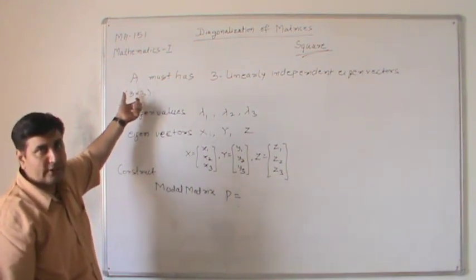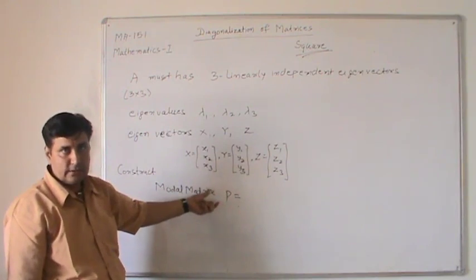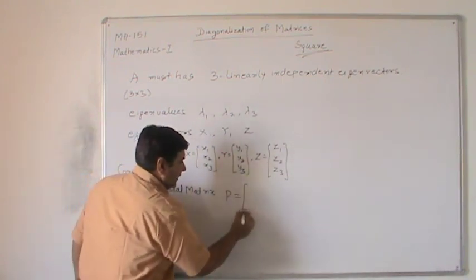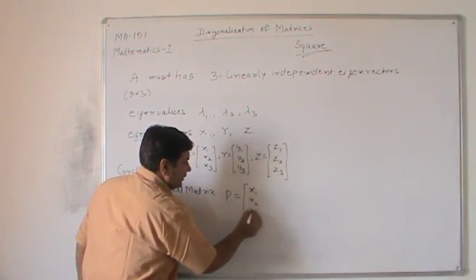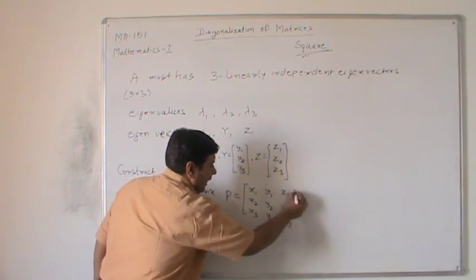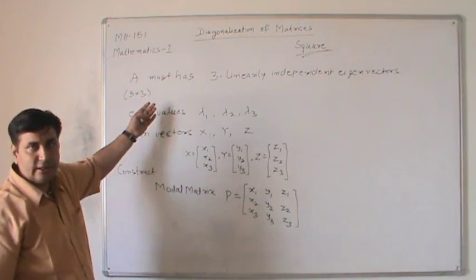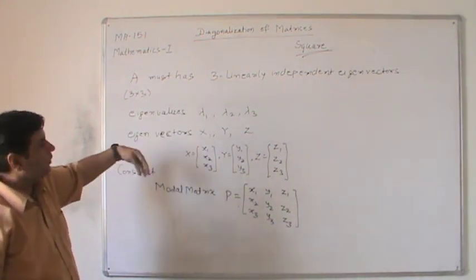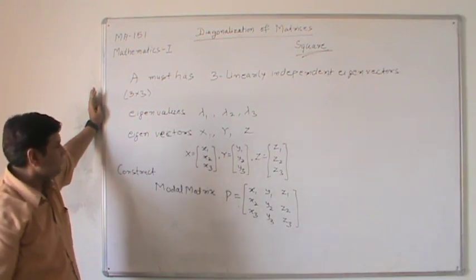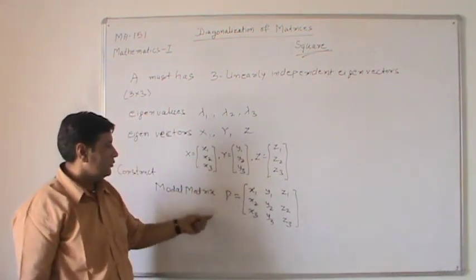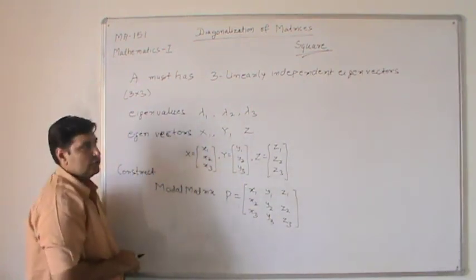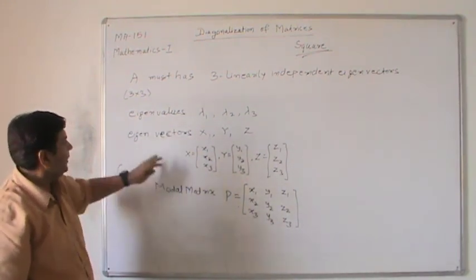This modal matrix is usually denoted by P and consists of eigenvectors as columns. For a given square matrix of order 3×3, the corresponding modal matrix will also be of order 3×3. The modal matrix will look like: first column [x1, y1, z1], second column [x2, y2, z2], third column [x3, y3, z3]. We write all the eigenvectors side by side. This same idea applies to square matrices of other orders, such as 2×2 and 4×4.